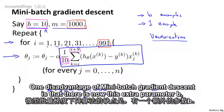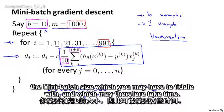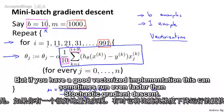One disadvantage of mini-batch gradient descent is that there's now this extra parameter b, the mini-batch size which you may have to fiddle with and which may therefore take time. But if you have a good vectorized implementation, this can sometimes run even faster than stochastic gradient descent.